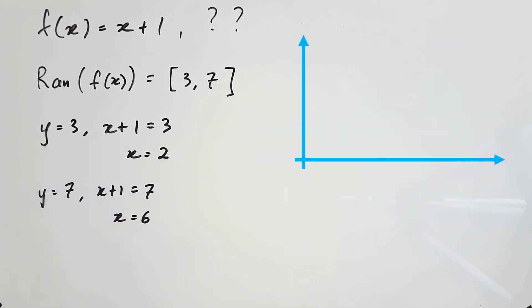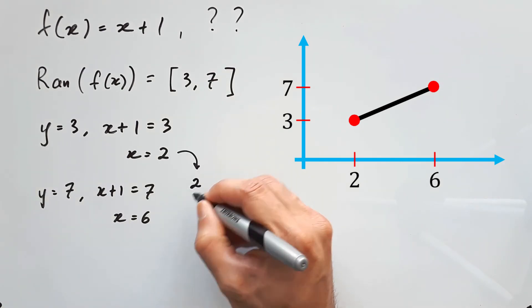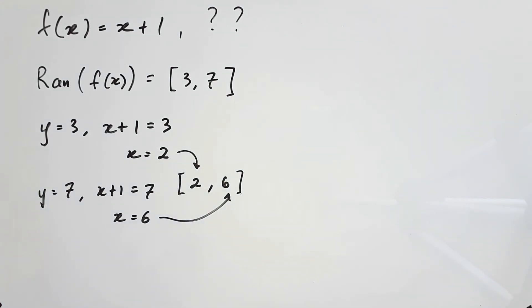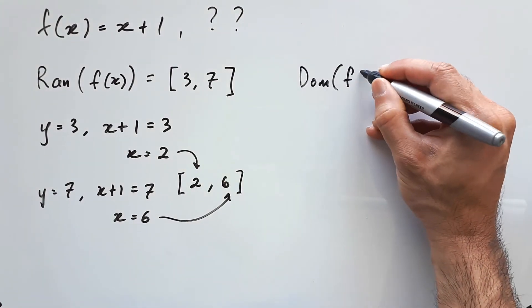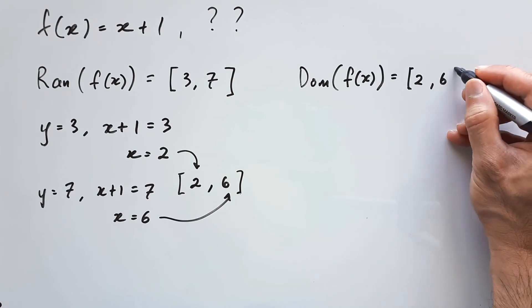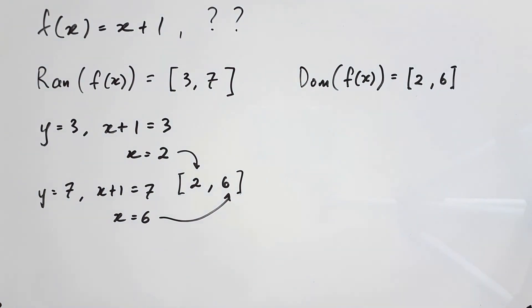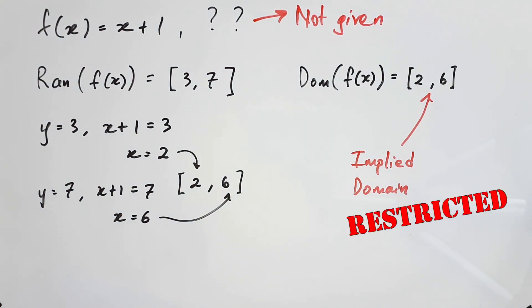Looking at this from the perspective of a graph, if x plus 1 is a line that just goes straight through for infinity, but the lowest point is 3 and the highest point is 7, then you would have to chop the graph on both sides, revealing that the x values only go between 2 to 6. So we can conclude here and say that the domain is going from 2 to 6, including both limits, and this is an implied domain because there were no limits given to you. More specifically, it is an implied restricted domain because it has some man-made limits which were partially revealed to you through the range.